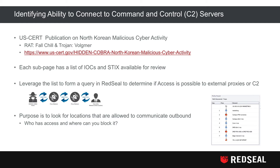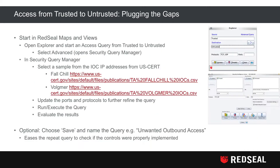Following the US-CERT publications on the North Korean militia cyber activity, each of the sub-pages for FALLCHILL and the Trojan Volgmer have a list of IOCs and indicators available for review. You can leverage this list to form a query with RedSeal to determine if access is possible to these external proxies or C2 servers. Our purpose is to look for locations that are allowed to communicate outbound from our internal network.